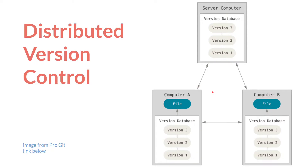But it doesn't actually need to be that way. If A and B are connected, A and B can directly pull and push their own versions across each other's computers—you don't need to go through the server or the cloud. No repository or version database is more important than any other, except that how you use it makes it so. Now let's zoom in on what the database itself looks like.